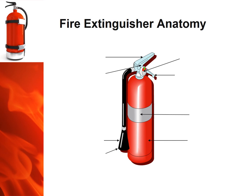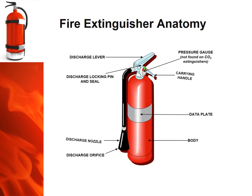We should all be aware of the parts of a fire extinguisher and what to look for during an inspection. These parts include: the discharge lever, discharge locking pin and seal, discharge nozzle, discharge orifice, pressure gauge, carrying handle, data plate, and body. Knowing the location and condition of these parts will be important during an inspection.